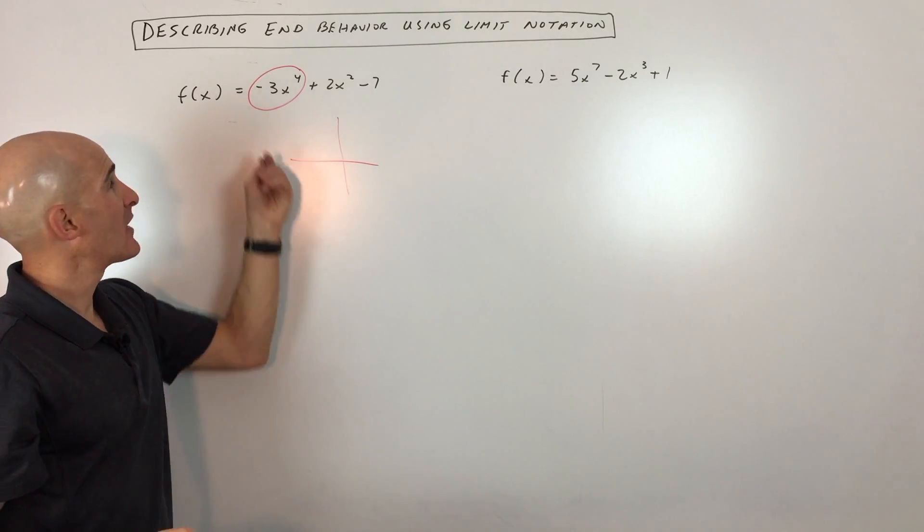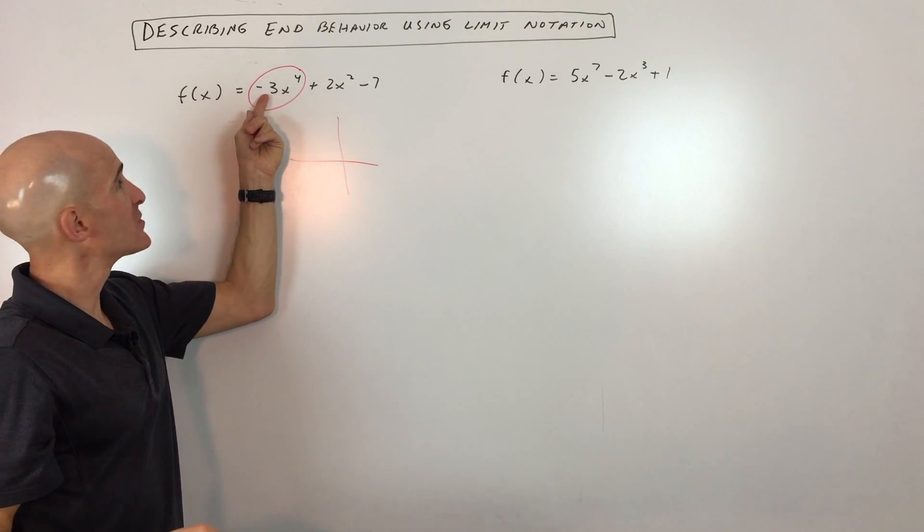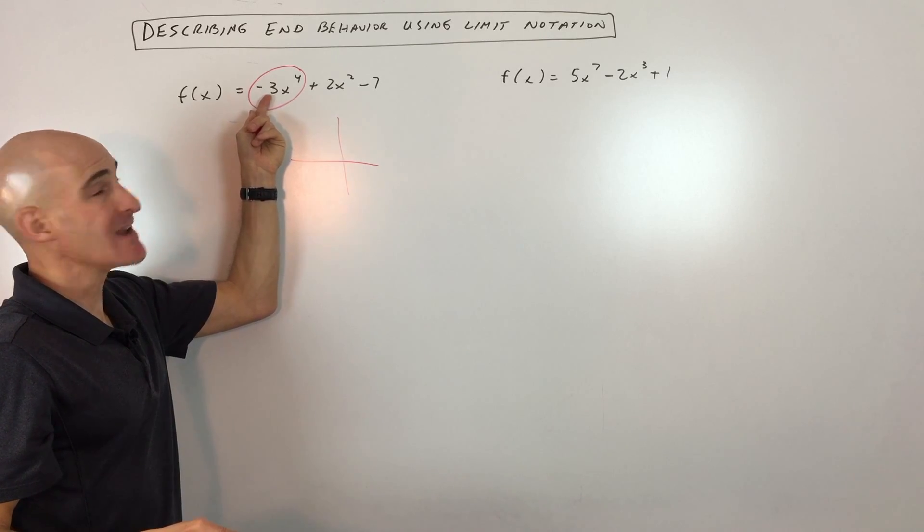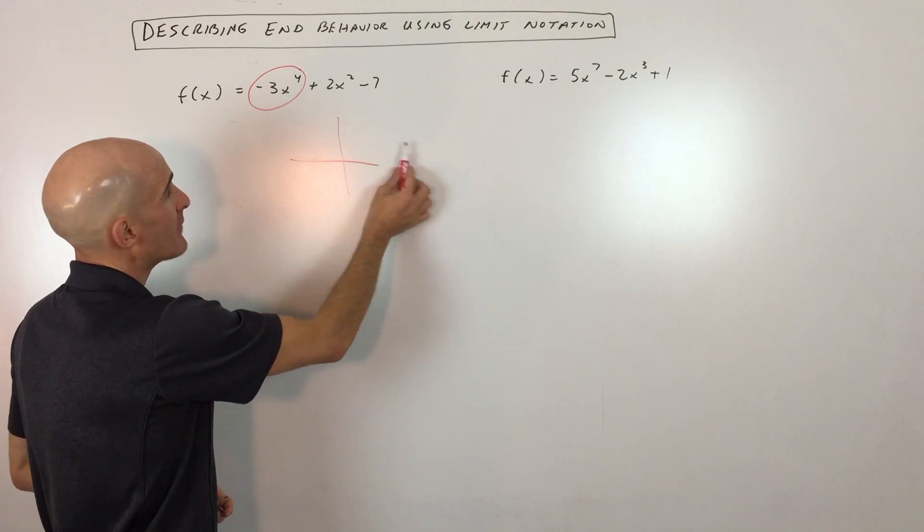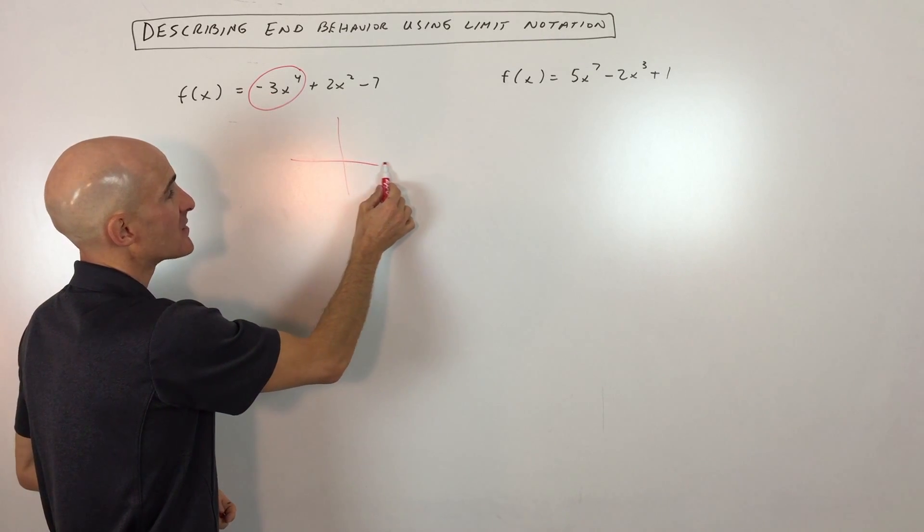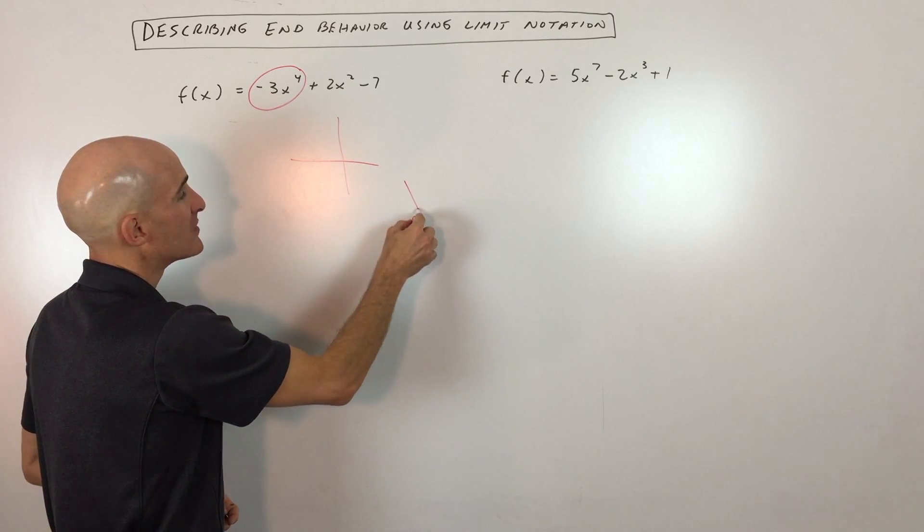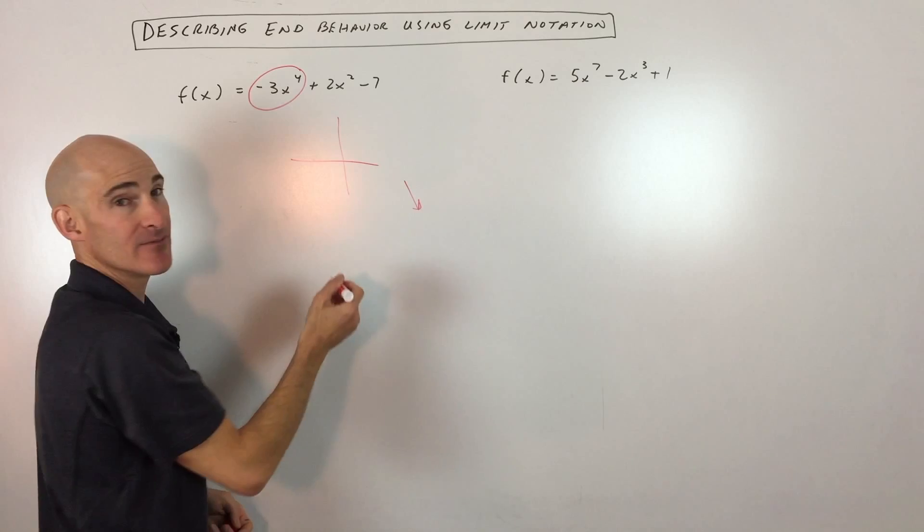And then what we're going to do is look at the leading coefficient. So you can see the leading coefficient is negative, and what that tells us is about the right end behavior. So that means if it's negative, as x gets larger and larger, it's going to go down towards negative infinity.